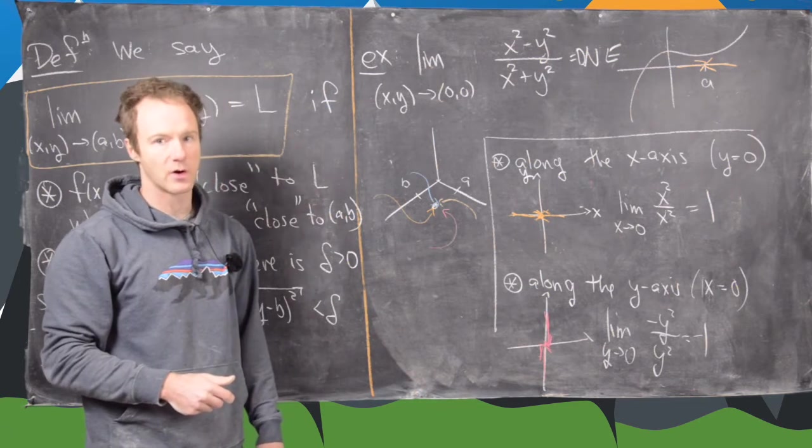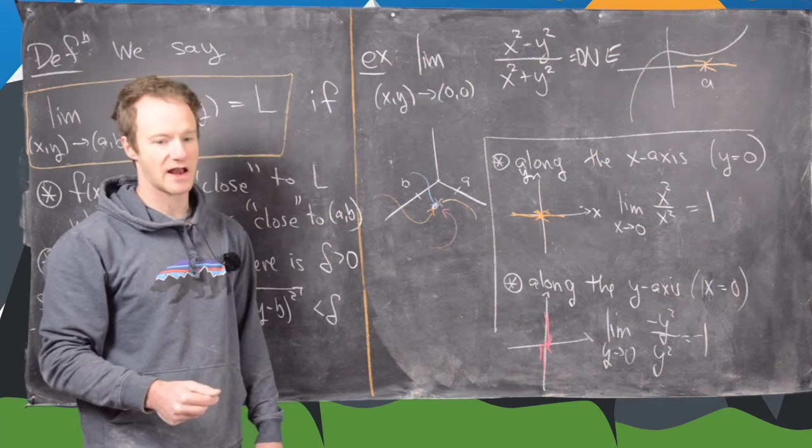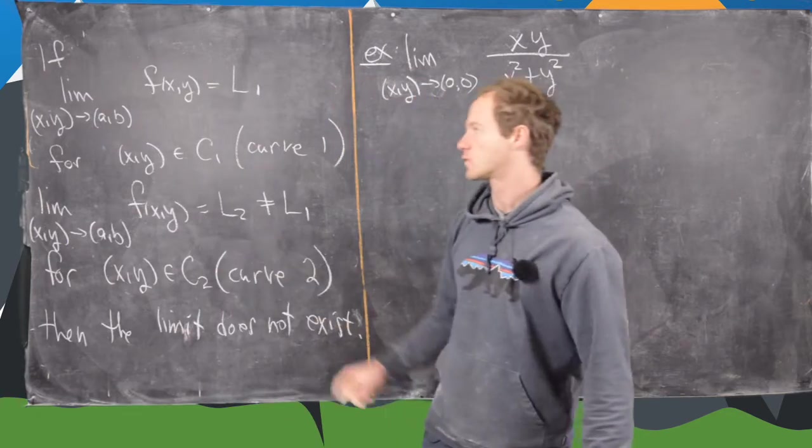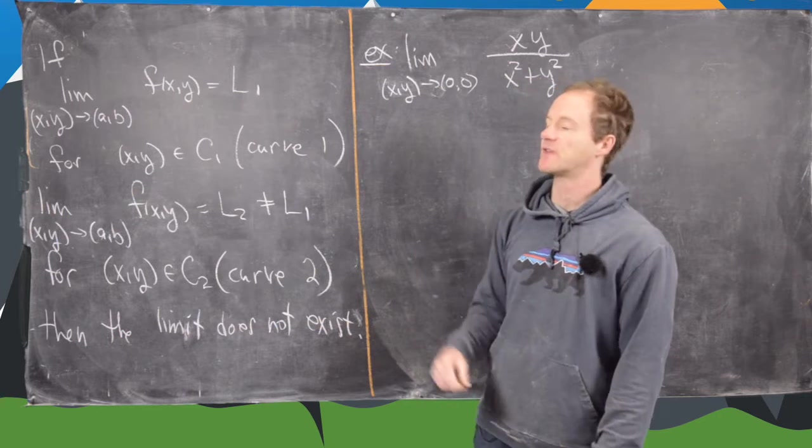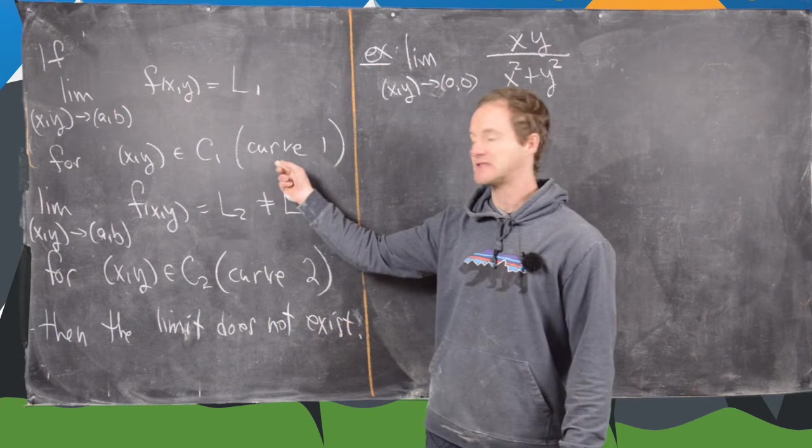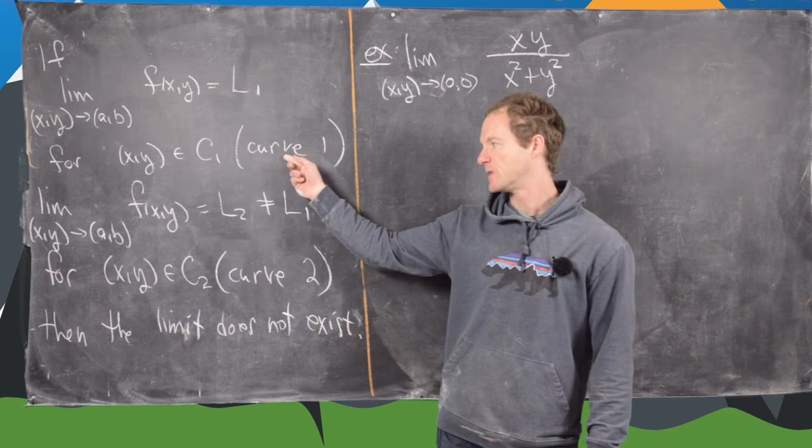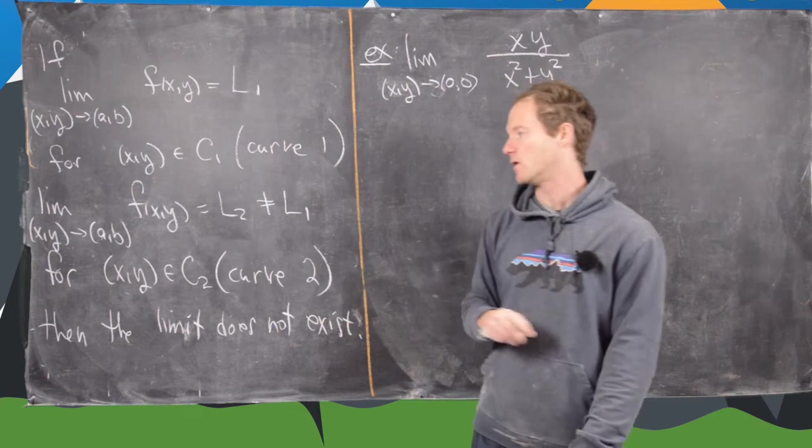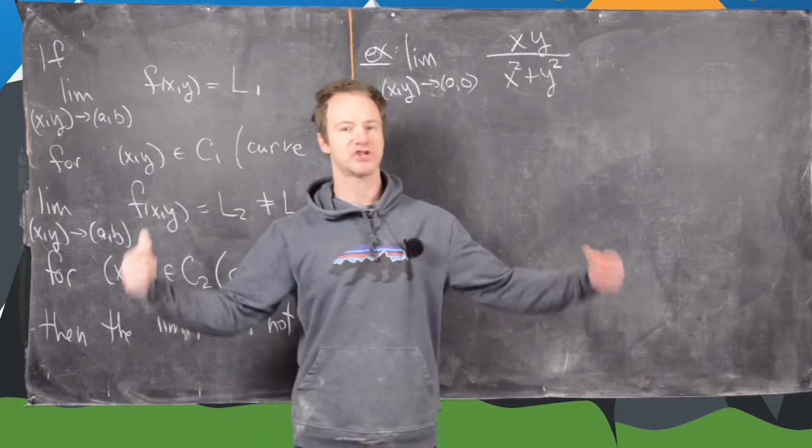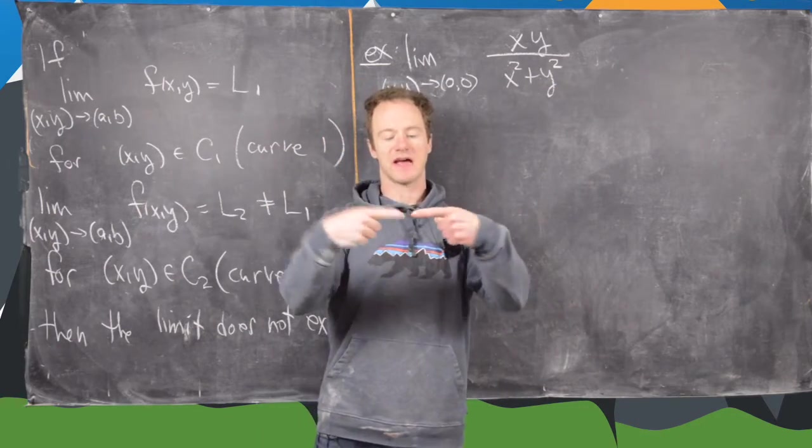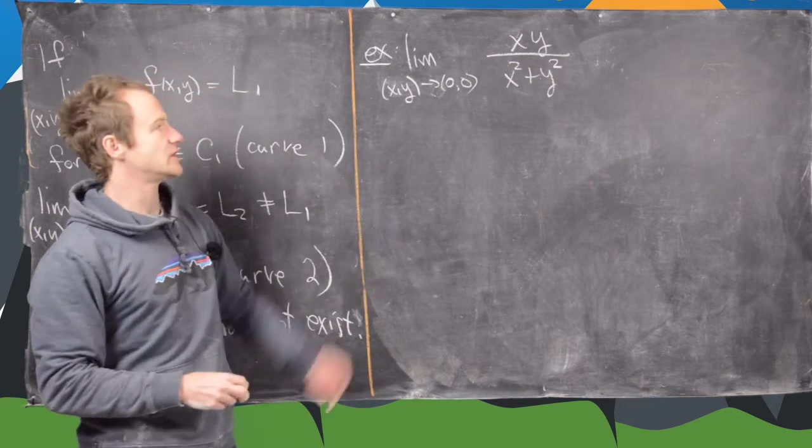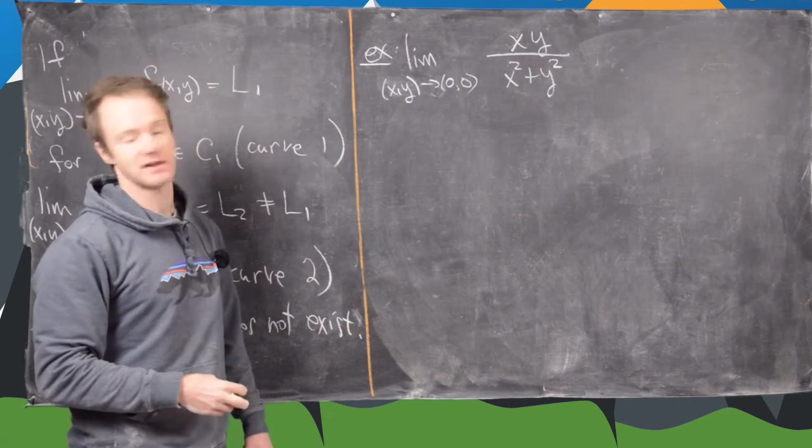Here's the rule. If the limit as XY approaches AB of f of XY equals L1 along C1, and if it's equal to L2, which is not L1 along a second curve, then the limit does not exist. In the last board, we showed a limit going along the x axis and the y axis not being the same, and so that limit did not exist. Now we're going to use a similar strategy here to show that this limit does not exist.